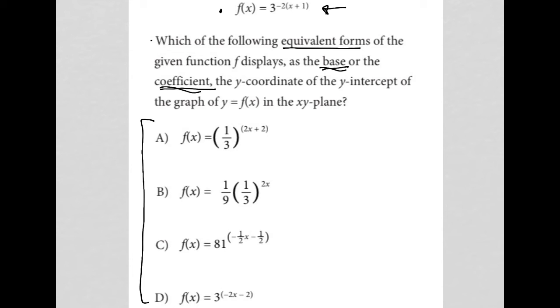Without the use of a graphing calculator, I can say anytime I'm trying to find the y-intercept, all I need to do is set x equal to 0. So I'm going to take this f(x) and turn it into f(0), which would equal 3 to the negative 2 times (0 plus 1), which becomes 3 to the negative 2 times 1, which is 3 to the negative 2, which would be 1 over 3 squared, which is 1 over 9.